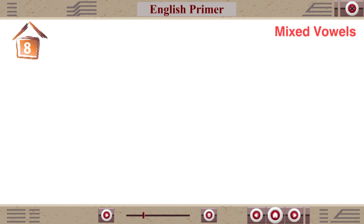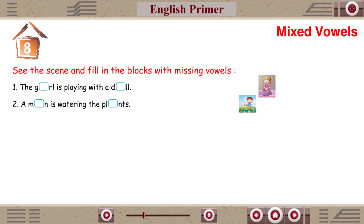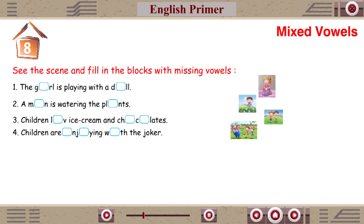Chapter 8: Mixed Vowels. See the scene and fill in the blocks with missing vowels. 1. The girl is playing with a doll. 2. A man is watering the plants. 3. Children love ice cream and chocolates. 4. Children are enjoying with the joker. 5. Buffalo is giving milk.